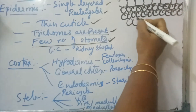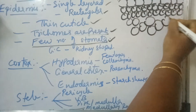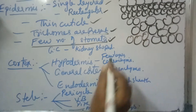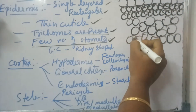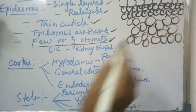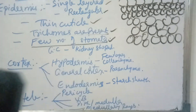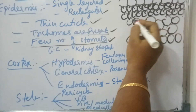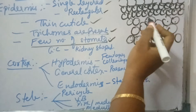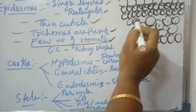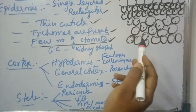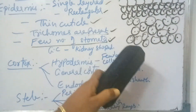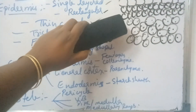Next to hypodermis, loosely arranged parenchymatous tissue is present — this is called general cortex. The general cortex is arranged with intercellular spaces. The upper layers of this parenchyma have chloroplasts for synthesizing food materials, and the lower layers have leucoplasts for storing food materials.